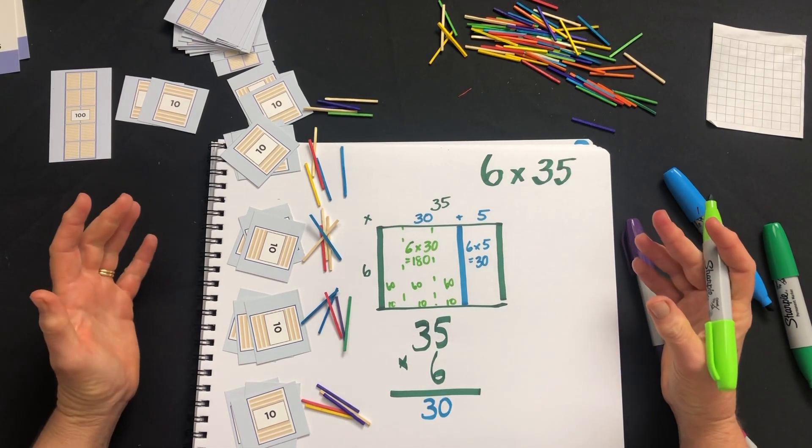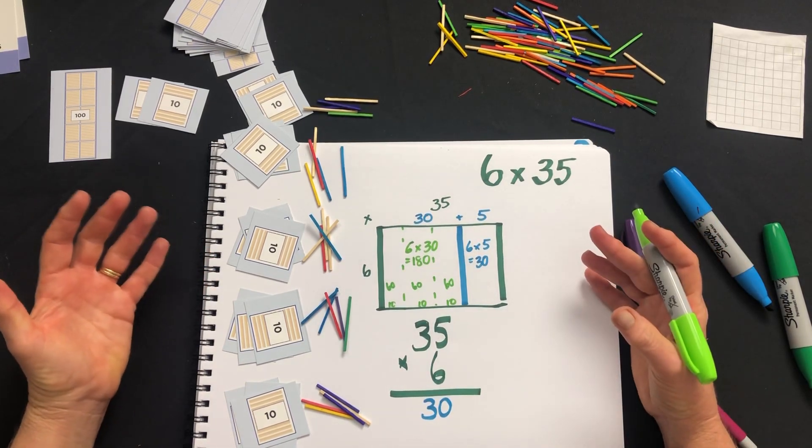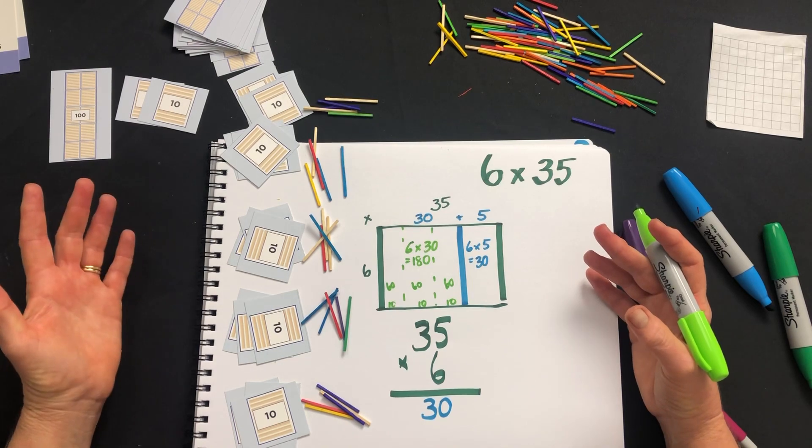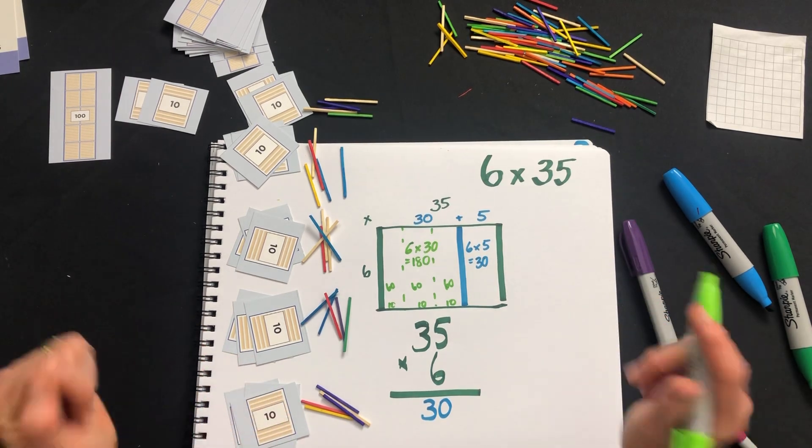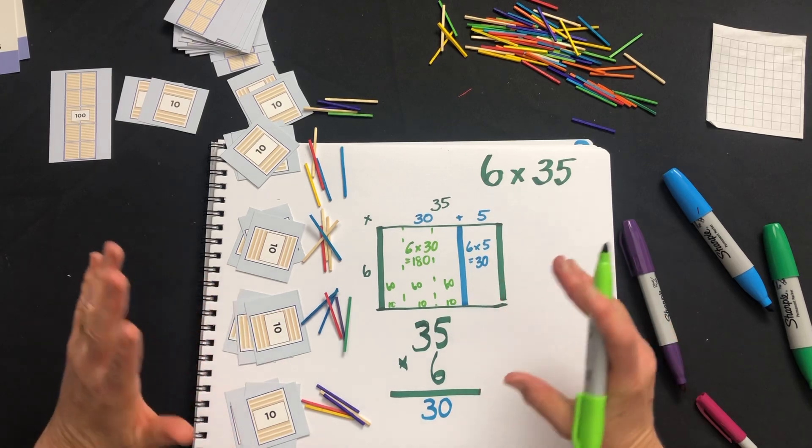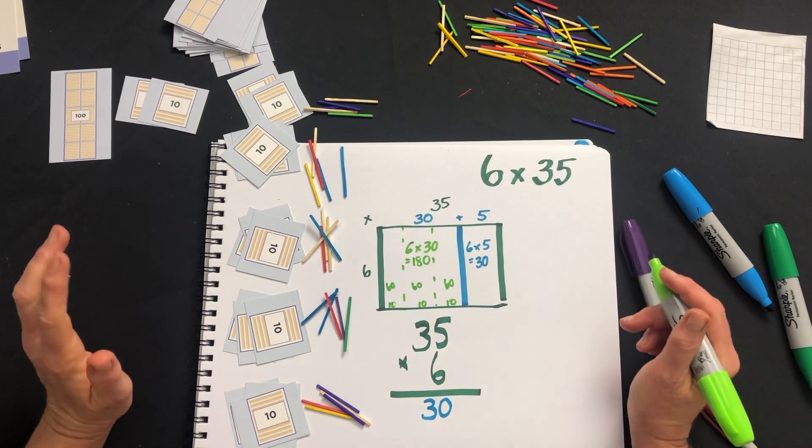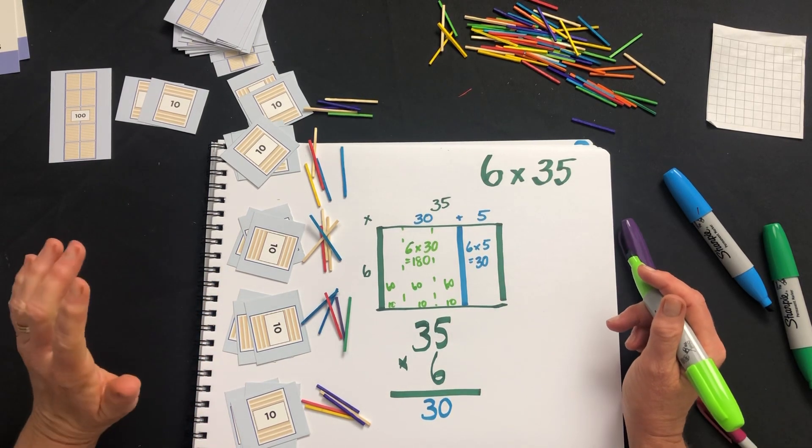Try and avoid using things like '6 times 3 is 18 and put a zero on the end.' That doesn't build their understanding. It's a shortcut. It's okay if you understand what the shortcut means, but most students won't and it will confuse them.